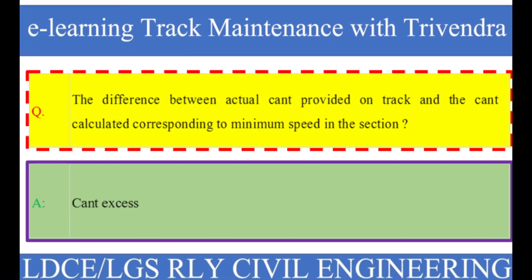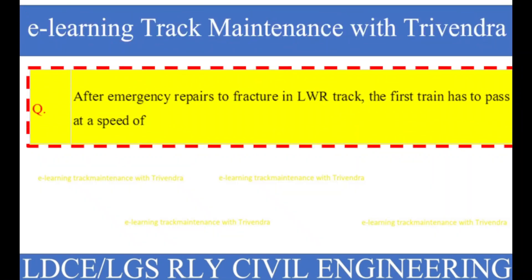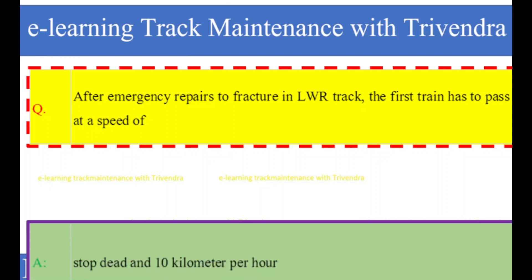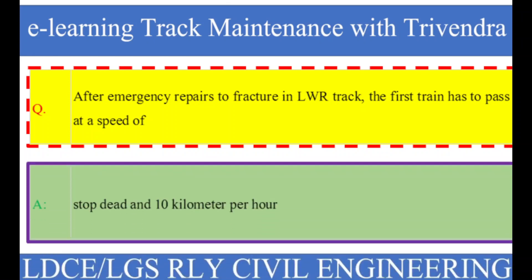Question number 71: After emergency repairs to a fracture in LWR track, the first train has to pass at a speed of? The right answer is stop dead at 10 kilometers per hour.